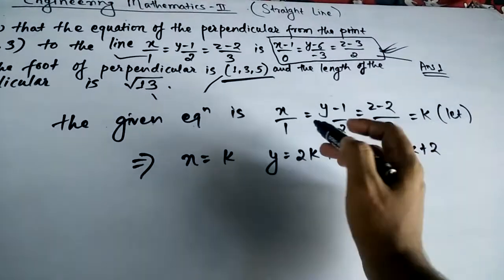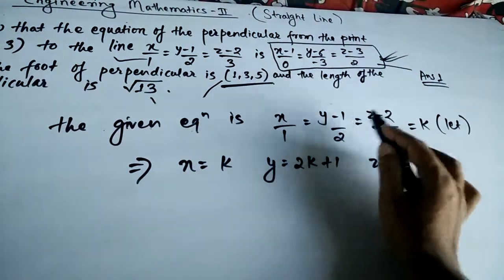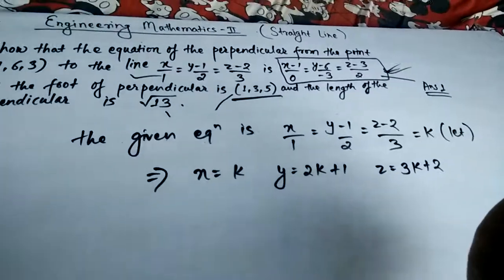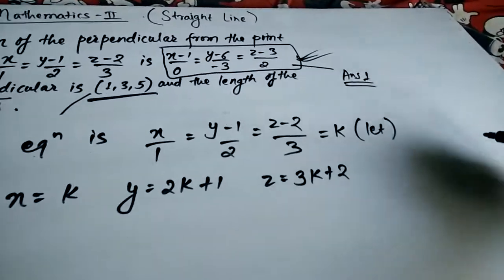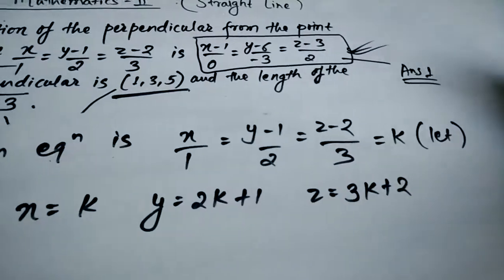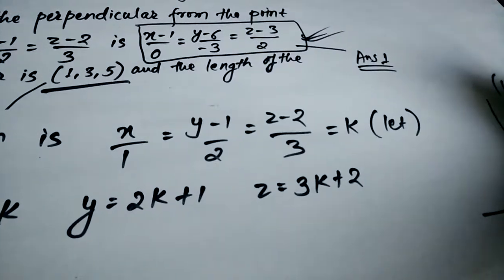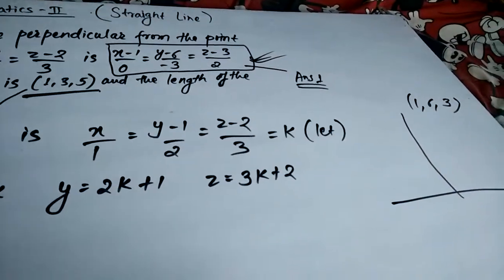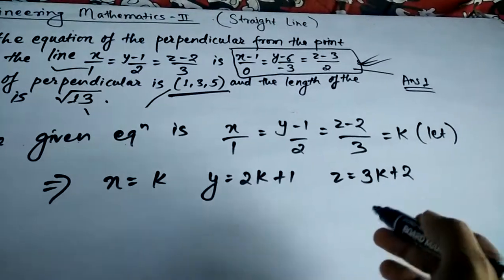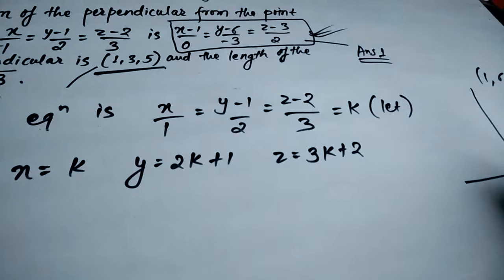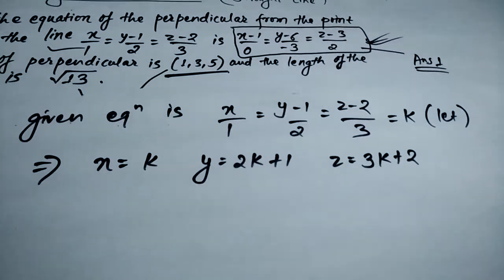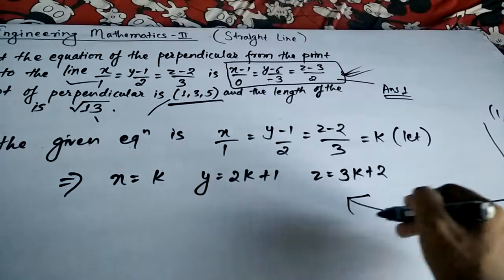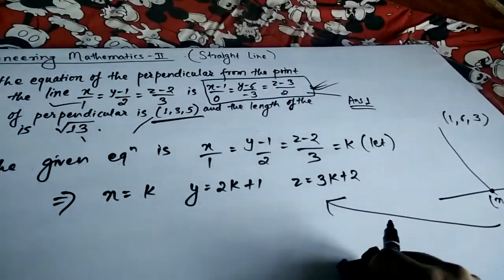We have x = k, y = 2k+1, z = 3k+2, derived from the parametric form of the line. We have also been given the point (1,6,3). Now we have this point expressed in terms of k as well.